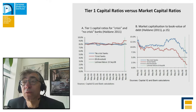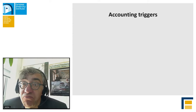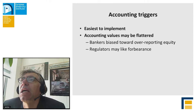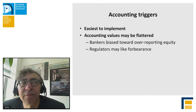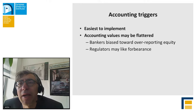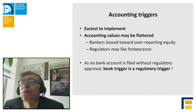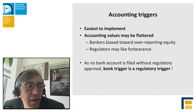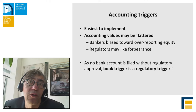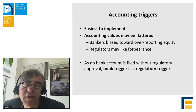Why are there market triggers? The positives of accounting triggers are that they are easy to implement, but accounting values may be flattered — bankers have a bias towards saying everything is fine, and regulators may prefer forbearance to avoid market contagion. Because every single CoCo issue has an accounting trigger, and accounting triggers are de facto going to be activated by book reporting subject to regulatory approval, a book trigger is effectively a regulatory trigger. So in fact all the triggers we have are discretionary regulatory triggers.